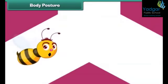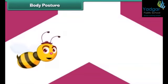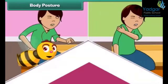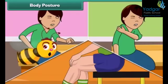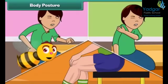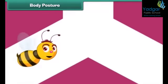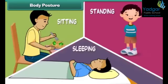Do you know why we sometimes feel pain in our back, shoulders and legs? This happens due to incorrect posture of the body. Posture is the position in which we hold our body while sitting, standing or sleeping. A correct posture includes standing straight with no bending, sitting with the back straight without support, and lying down with a pillow under our head.